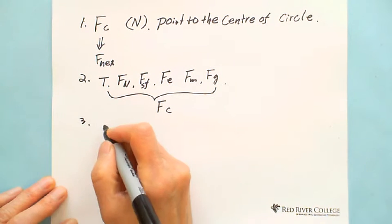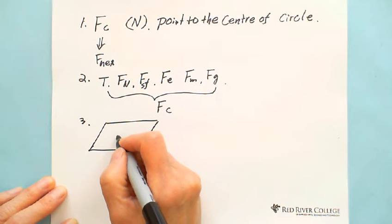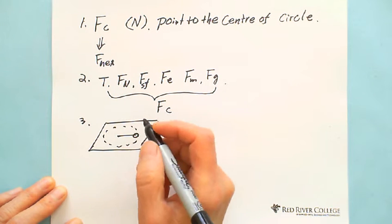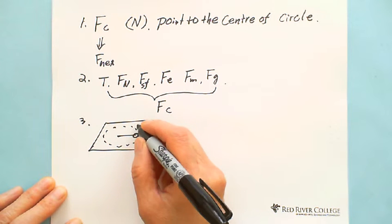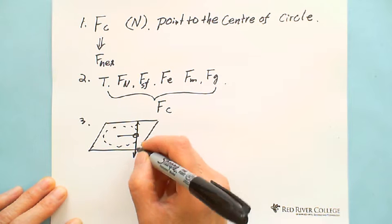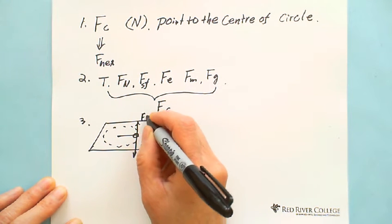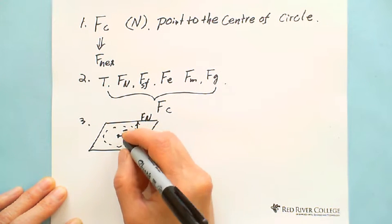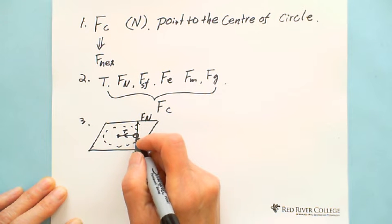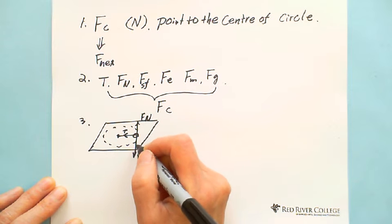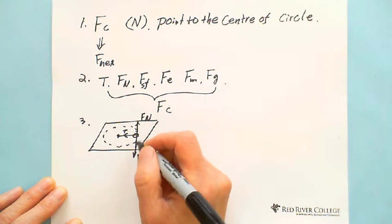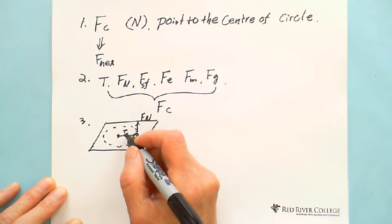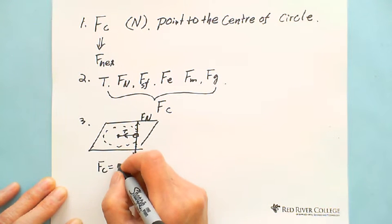For example, if you tie a string and the other side is tied to a small ball doing circular motion on a table, the ball is acted on by gravity, normal force from the table, and tension from the string. Because normal force and gravity are balanced with no vertical motion, the only circular motion is horizontal. In this situation, the centripetal force is the tension force.